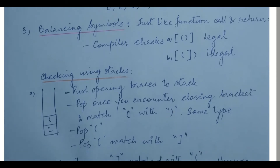Balancing of symbols: just like a function call where main calls xyz, xyz has to return back to main and then main exits. When you have a function call, that context is pushed into the stack; when you return, it is pulled out and there will be nothing in the stack once you finish. Similarly, symbols in a program — whenever you write an equation with brackets, opening and closing — they have to be in proper order so that your equation is legal.